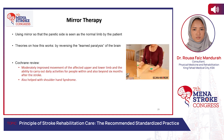Mirror therapy uses mirrors on the paretic side, so the affected limb is seen as normal by the patient, and works by reversing the learned paralysis of the brain. The Cochrane review states it moderately improves movement of the affected upper and lower limb and the ability to carry out daily activities both within and beyond six months after stroke. It also helps with shoulder-hand syndrome.